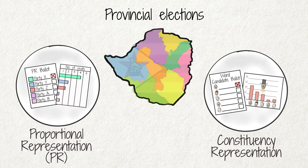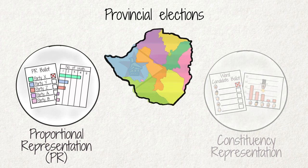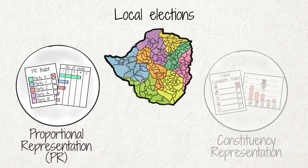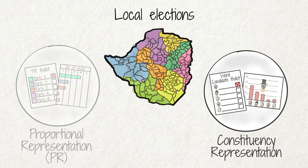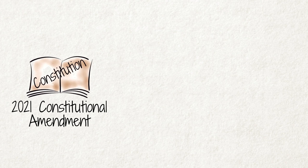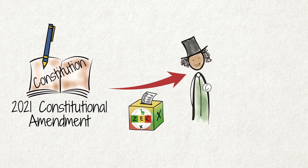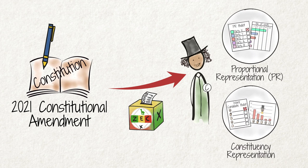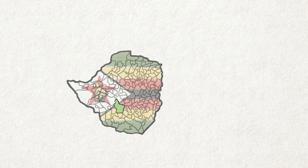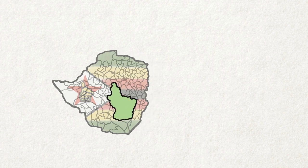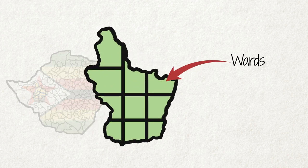For provincial elections, we only use the PR System. In local government elections, we only use the Constituency Representation System. The 2021 Constitutional Amendment makes provision for the election of local councillors through a combination of the PR and the Constituency Representation System. In local authorities, constituencies are called wards.